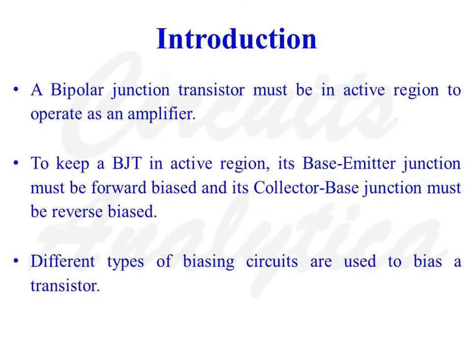A bipolar junction transistor must be in the active region to operate as an amplifier. To keep a BJT in the active region, its base-emitter junction must be forward biased and its collector-base junction must be reverse biased.